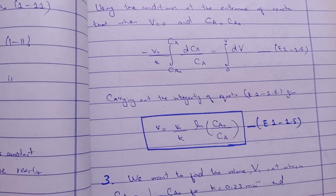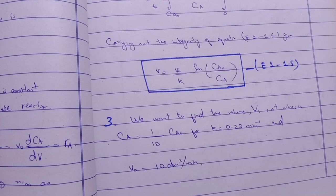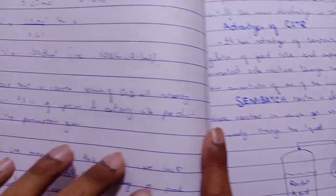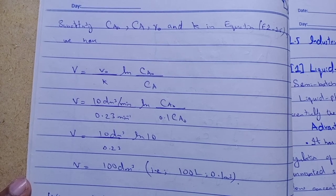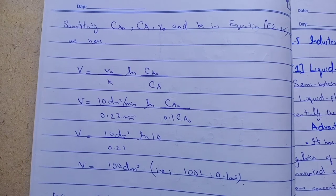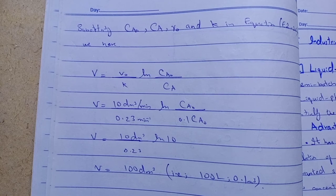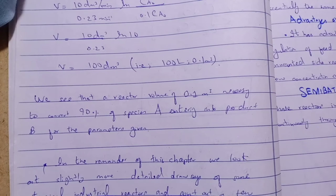We want to find the volume at which CA equals 10% of CA naught, i.e., CA equals 0.1 CA naught, for K equals 0.23 per minute and V naught equals 10 dm³/min. Using the derived equation V equals V naught over K times ln(CA naught over CA), we substitute the values: V naught is 10, CA naught over CA is 10 (since CA is 10% of CA naught), and K is 0.23 per minute. The answer is 100 dm³, or 100 liters.